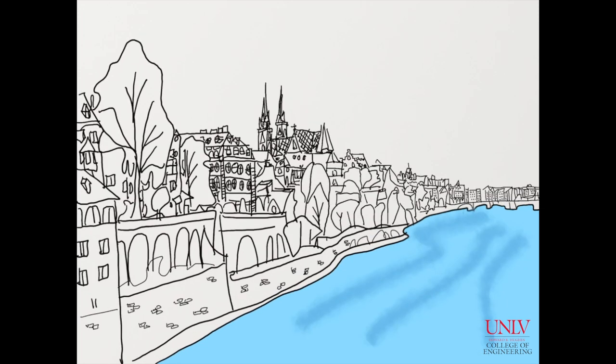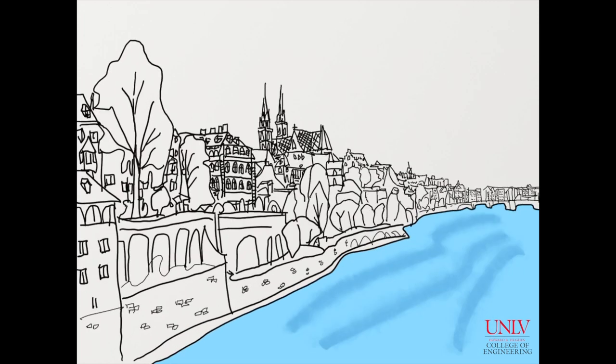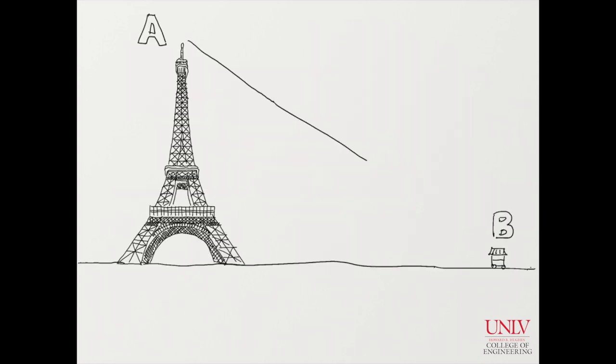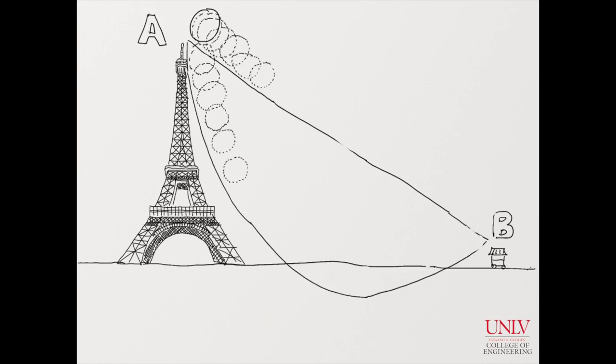In 1696, a Swiss mathematician Johann Bernoulli wrote a letter to challenge many renowned mathematicians and philosophers at the time with a simple math question. The question was this: what's a path that a ball can take from the top of Eiffel Tower to another point on the ground with the only force being gravity?